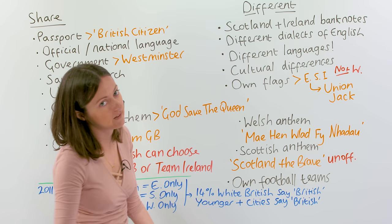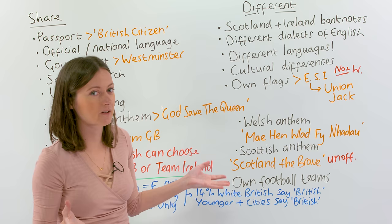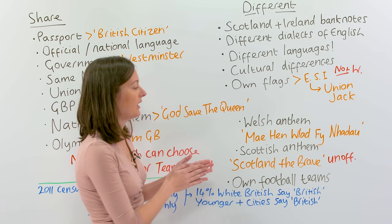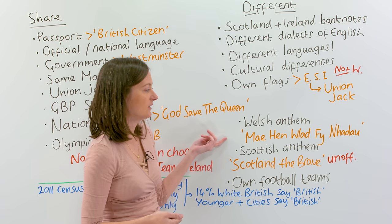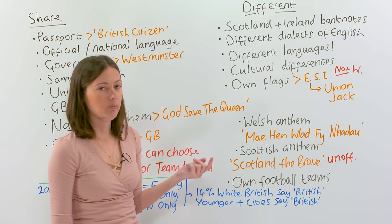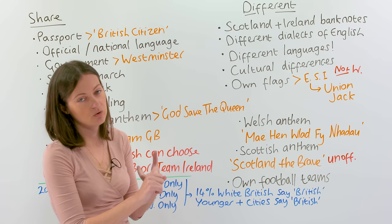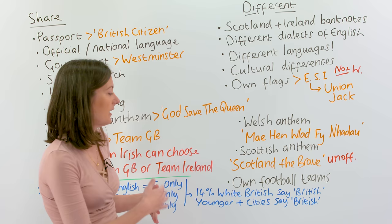Moving on to national anthems: God Save the Queen is for everyone — everybody in the UK can sing that as their national anthem. However, the Welsh also have a Welsh national anthem which they may prefer to sing, and this is in the Welsh language. Scottish people do not have their own official national anthem, yet they do have an unofficial one which is 'Scotland the Brave.' England and Northern Ireland do not have their own separate individual national anthems, either official or unofficial.